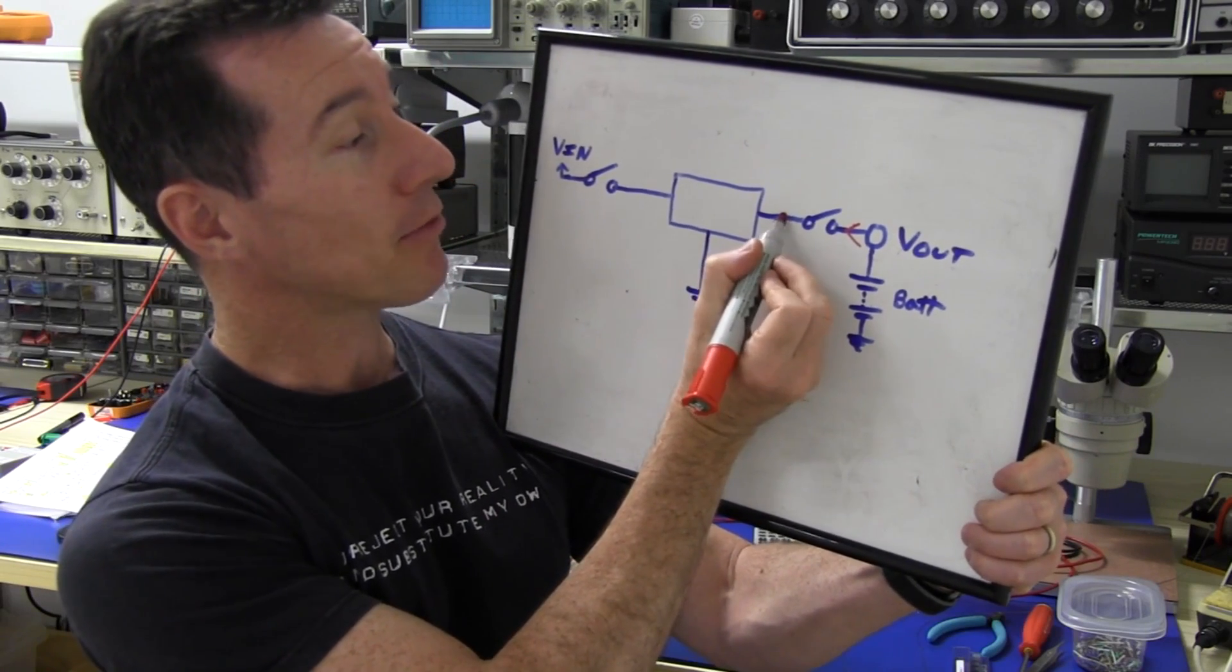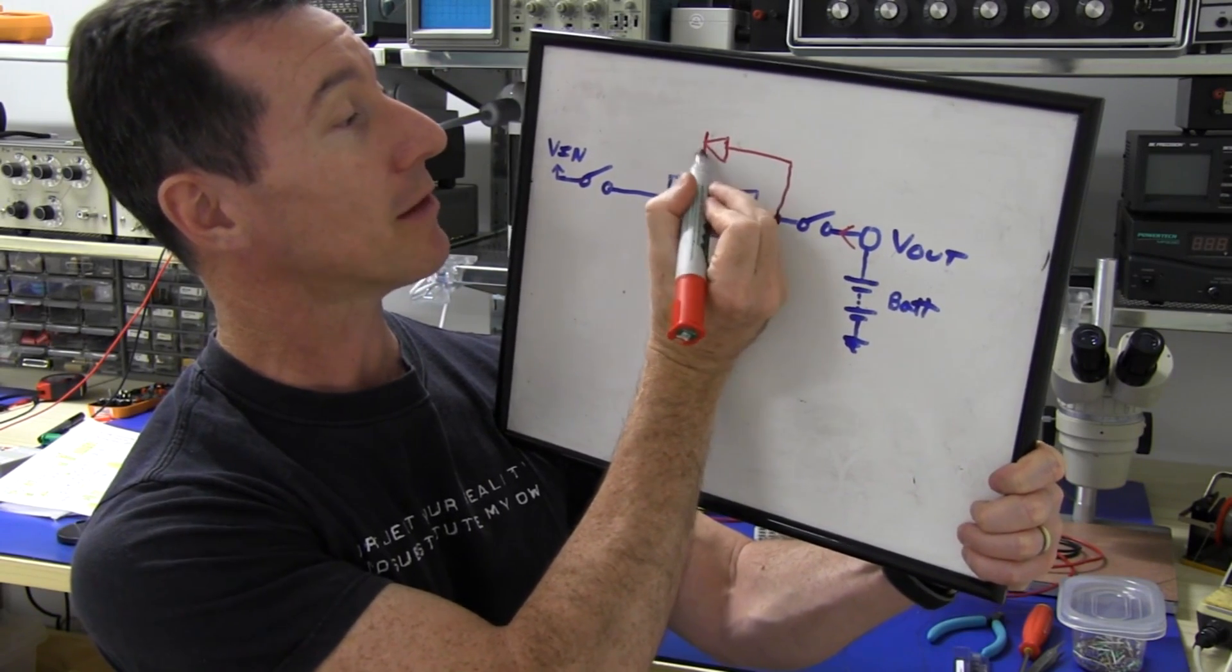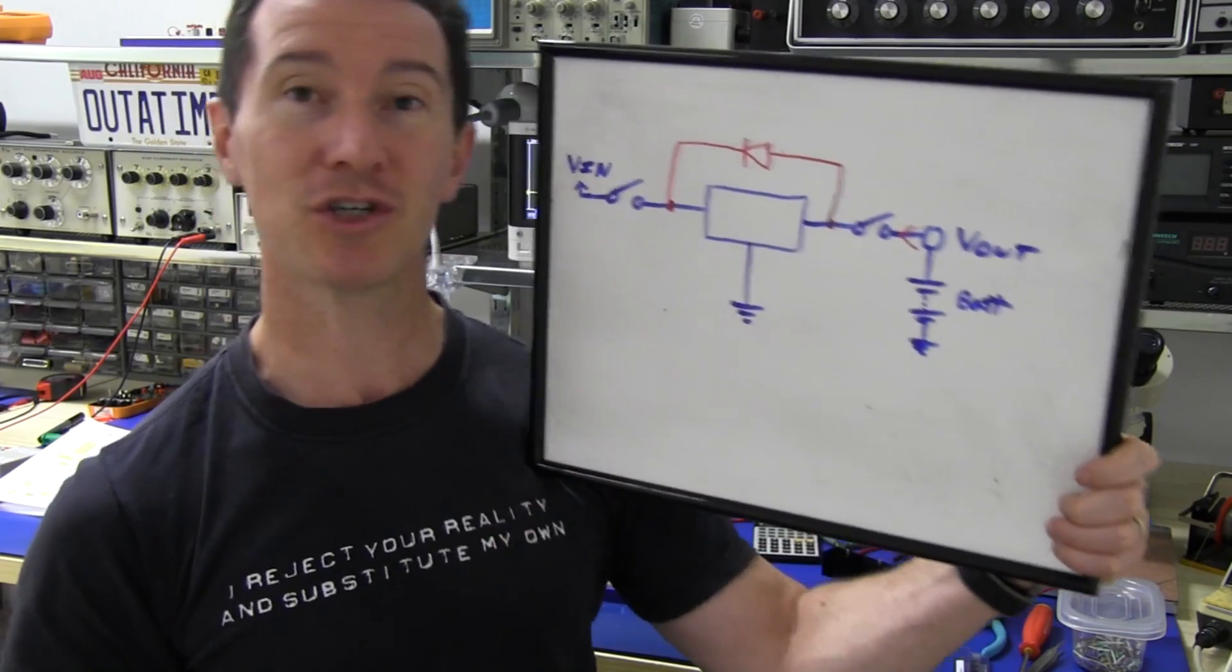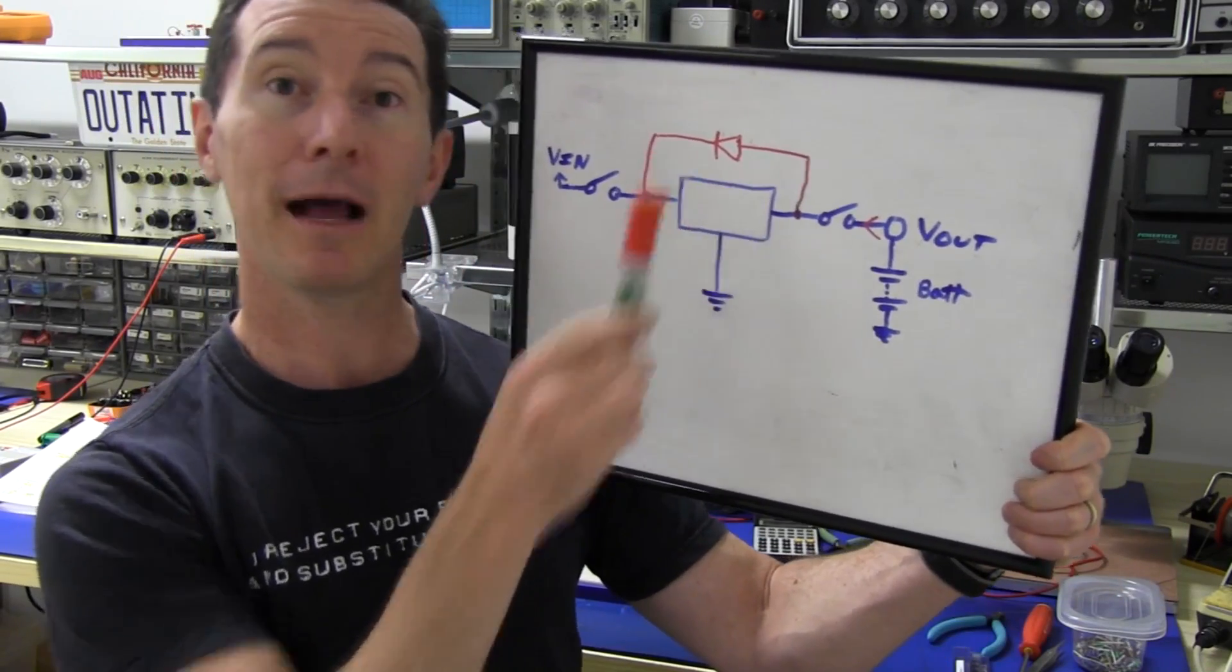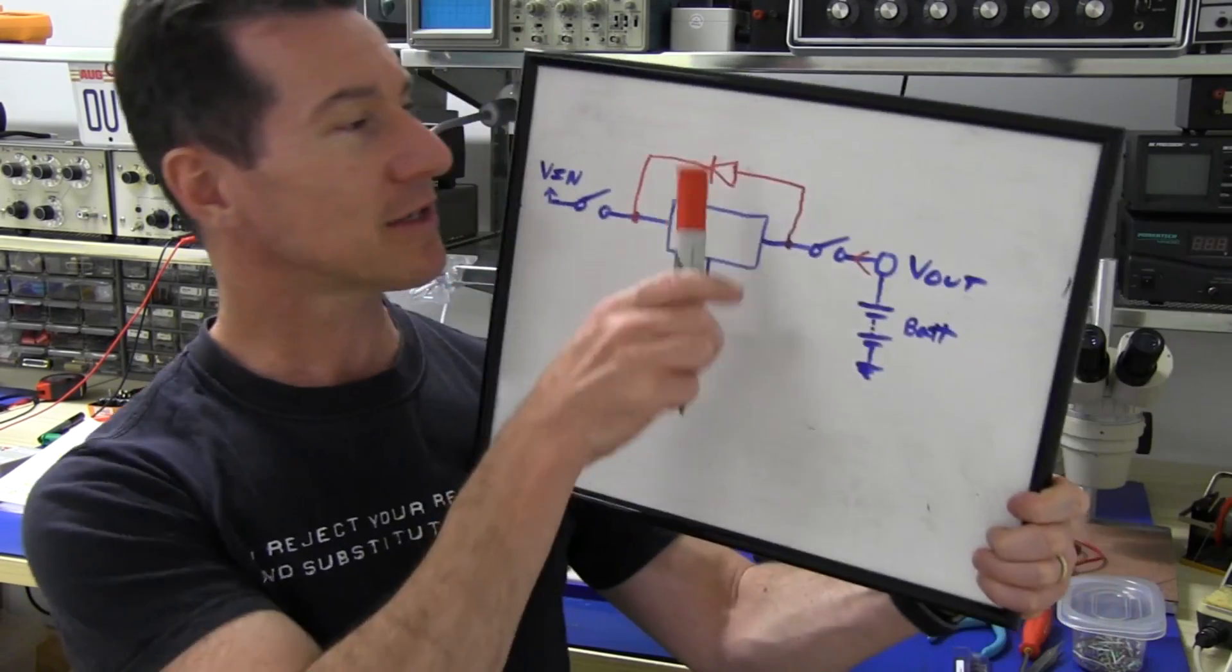Well, you can blow up your regulator and a lot of power supplies will typically have a reverse protection diode on there so you don't blow the pass transistor in the voltage regulator. And my design doesn't have that.